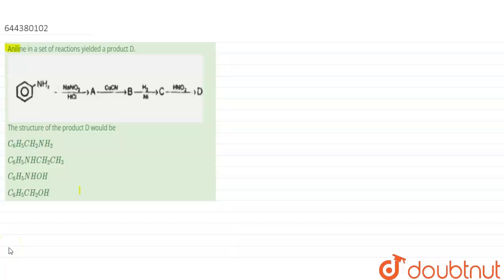Hello everyone, the question is aniline in a set of reactions yielded a product D. This is the set of reactions where aniline is reacted with NaNO2 HCl gives A, which on reaction with CuCN gives B, B on reaction with hydrogen and nickel gives C, and C on reaction with HNO2 gives the product D. So we have to write the structure of product D.